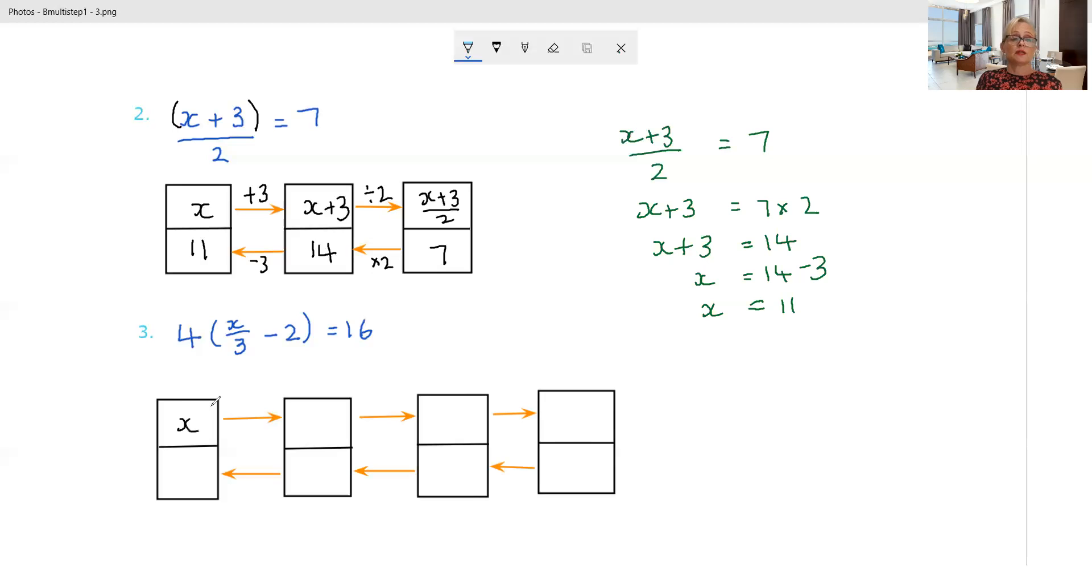What's the first thing that's been done? Well, it's been divided by 3 because it's only the x over the 3. So we've divided it by 3. Then what's happened? Well, 2's been taken away. So we've got x on 3 minus 2. And then what's happened? Well, the whole lot of that's been multiplied by 4.